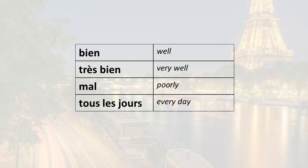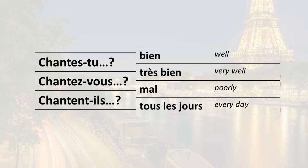So let's put this together with the vocabulary from last time: bien, très bien, mal, and tous les jours. Here it is all together. With the informal 'you': Chantes-tu bien? — 'do you sing well?' Chantes-tu très bien? — 'do you sing very well?' Chantes-tu mal? — 'do you sing poorly?' And Chantes-tu tous les jours? — 'do you sing every day?'